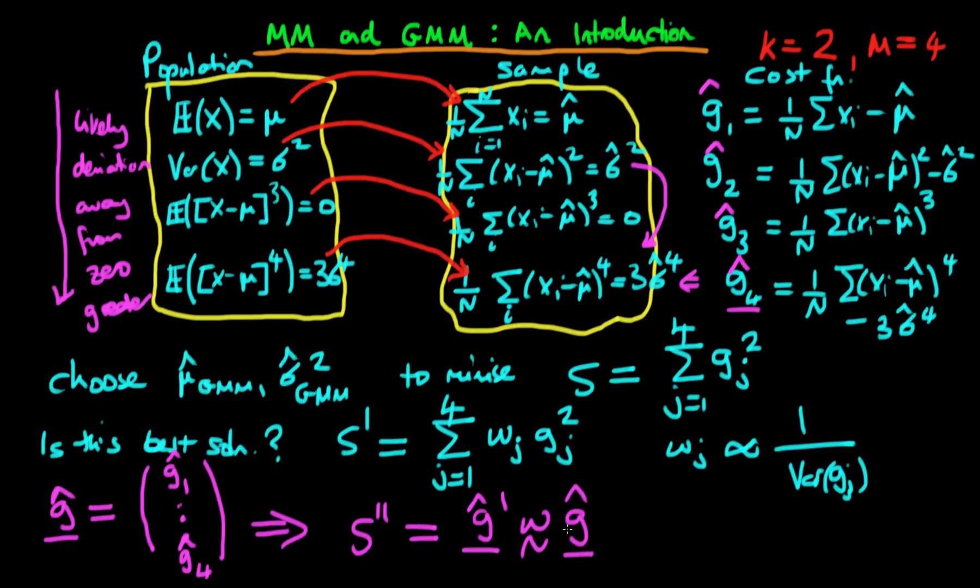And here now this weighting matrix is allowed to contain off-diagonal terms which control for the fact that some of these moment conditions are going to be correlated with one another. And if we choose our two parameters up here to minimize this particular function here, then perhaps this is a better way to go about things.